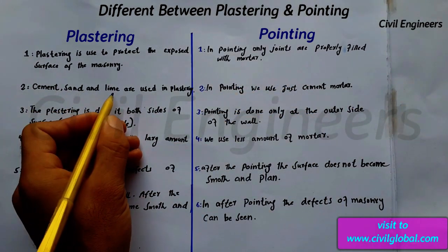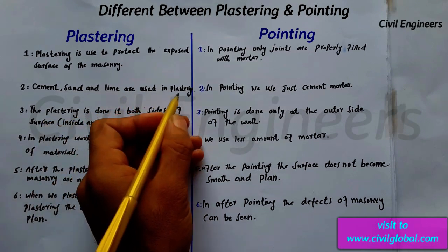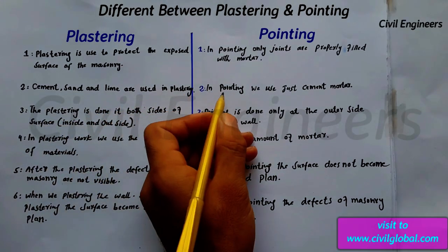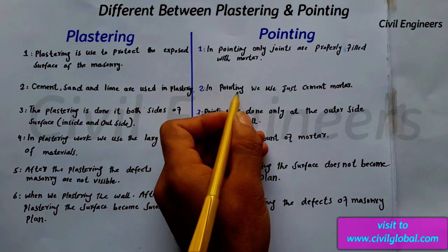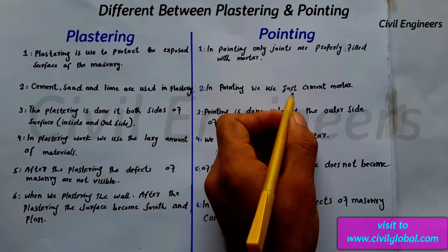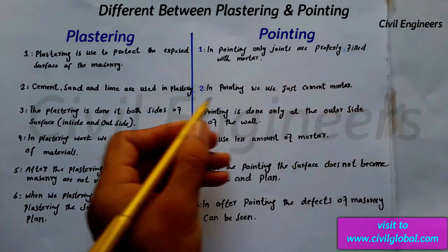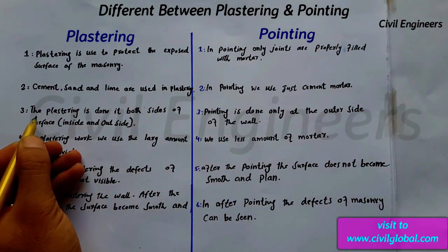Second, cement, sand, and lime are used in plastering. But in pointing, we use just cement mortar.